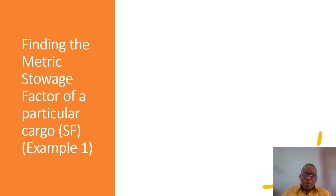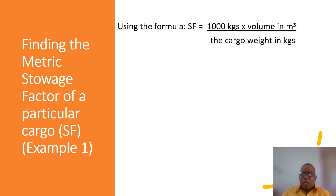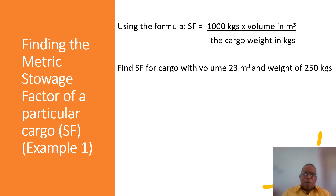When we are given the weight in kilograms and the volume in cubic meters, we can use this formula to find the metric storage factor of the cargo. The formula is: storage factor equals 1000 kilograms times the volume in cubic meters, divided by the weight in kilograms.